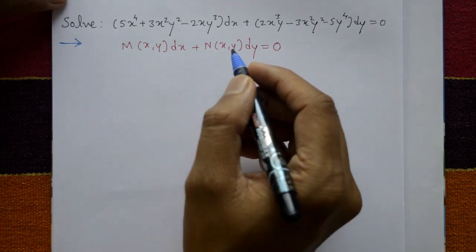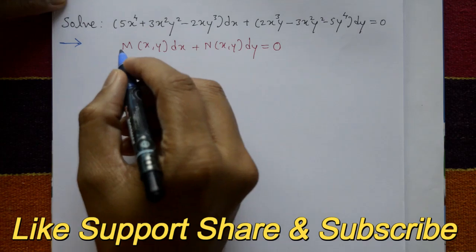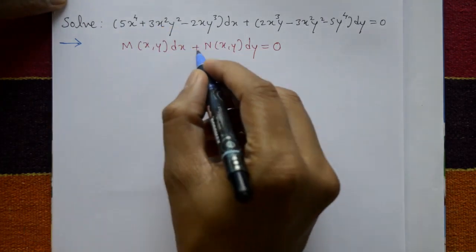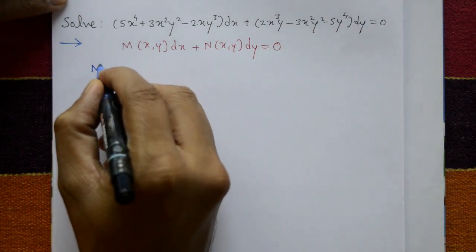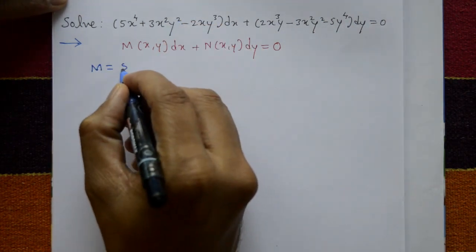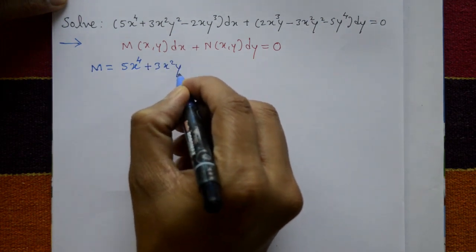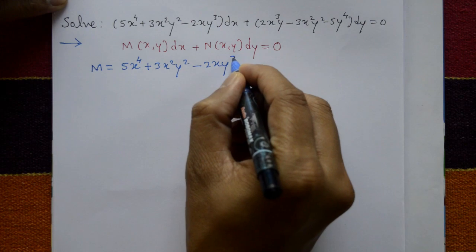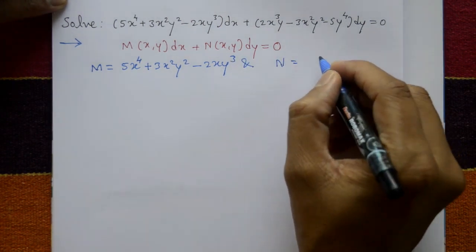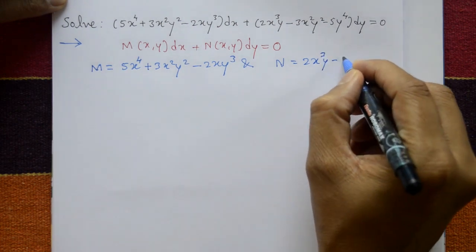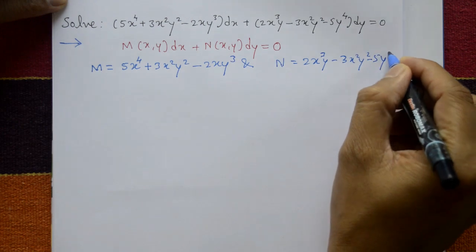This is a differential equation. First we check whether the given equation is exact or not. This equation is in the form M(x,y)dx plus N(x,y)dy equal to 0. Here M is equal to 5x⁴ + 3x²y² - 2xy³, and N is equal to 2x³y - 3x²y² - 5y⁴.